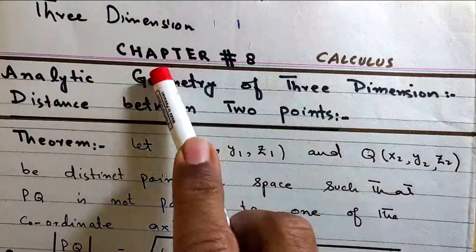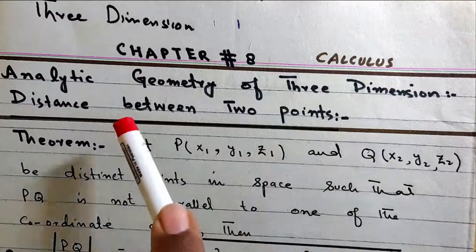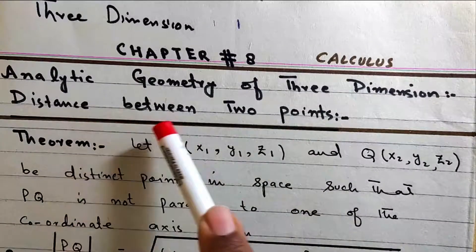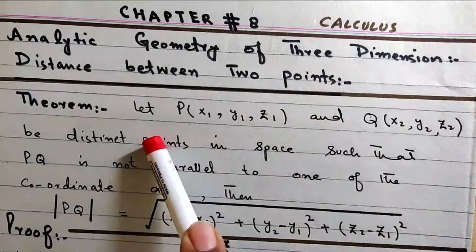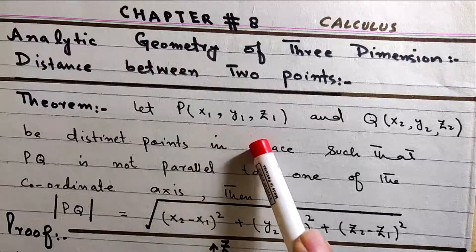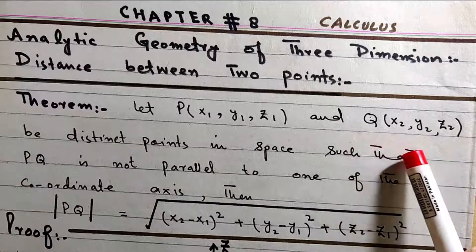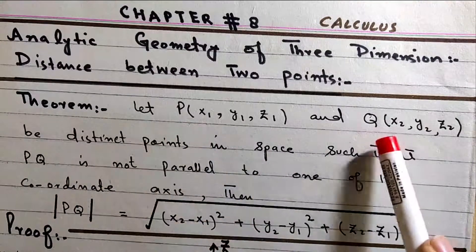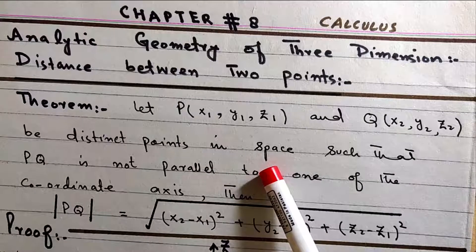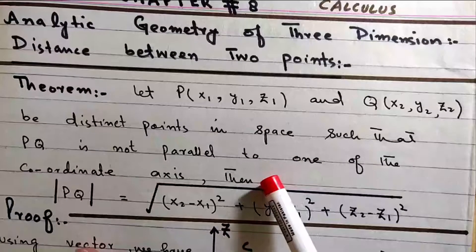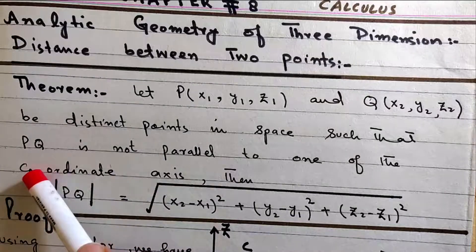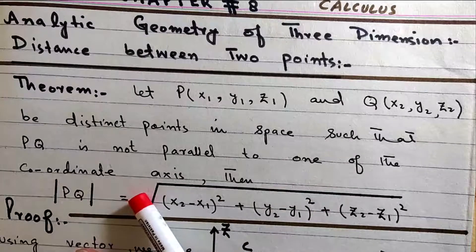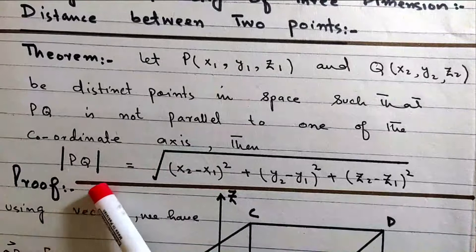Chapter eight, Analytic Geometry of Three Dimensions. Topic: distance between two points. Let P have components (x1, y1, z1) and Q have components (x2, y2, z2) as distinct points in space, such that PQ is not parallel to one of the coordinate axes — x-axis, y-axis, or z-axis.